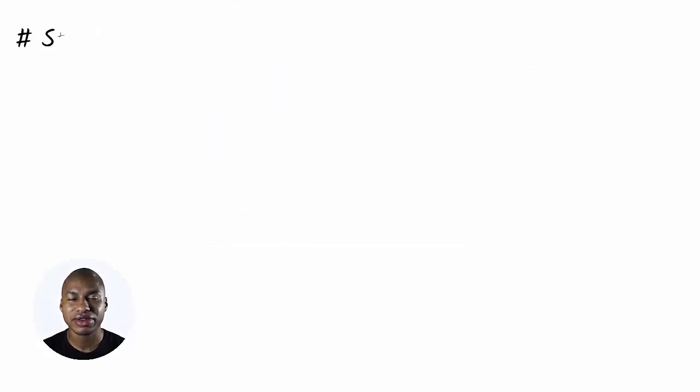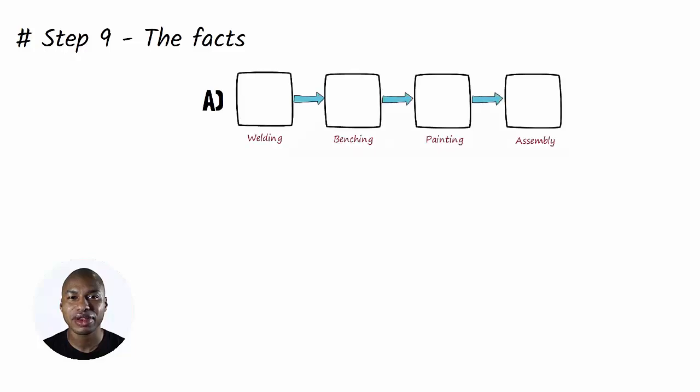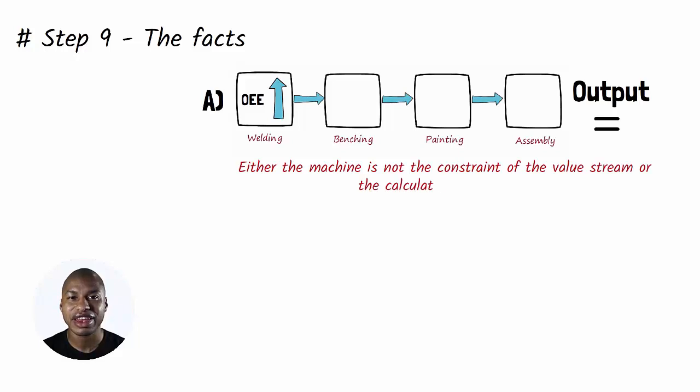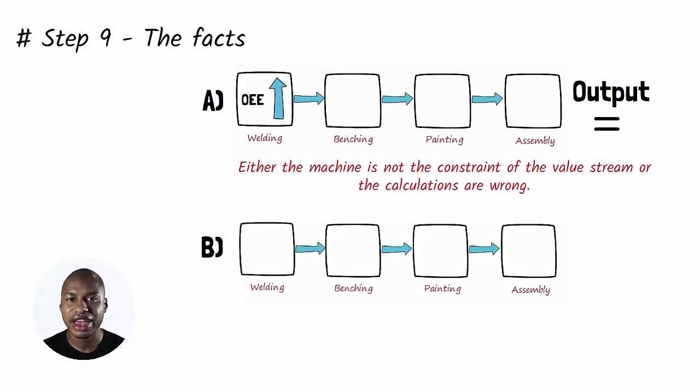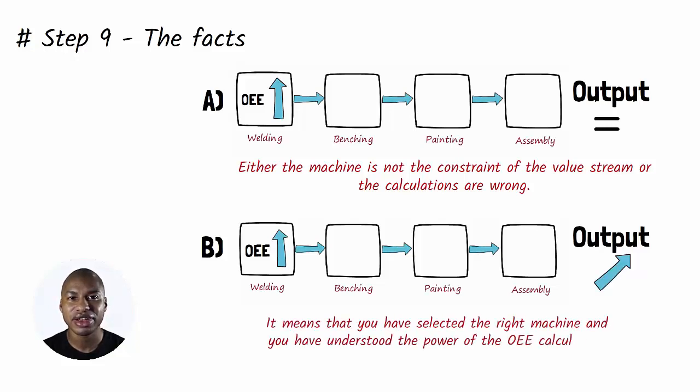Step 9. The Facts. The Moment of Verification. If after a few weeks the OEE has improved but the product output has not improved comparably, then either the machine is not the constraint of the value stream or the calculations are wrong. If instead, the improvement of the OEE corresponds to an increase in the output of the product, it means that you have selected the right machine and you have understood the power of the OEE calculation.